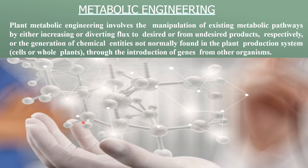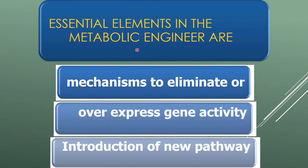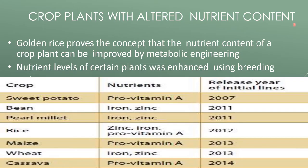Through the introduction of genes from other organisms. Essential elements in metabolic engineering are mechanisms to eliminate or over-express gene activity, or introduction of new pathways. Crop plants with altered nutrient content — golden rice proved the concept that the nutrient content of crop plants can be improved by metabolic engineering. Nutrient levels of certain plants were enhanced by using breeding, such as sweet potato where the nutrient content was increased.